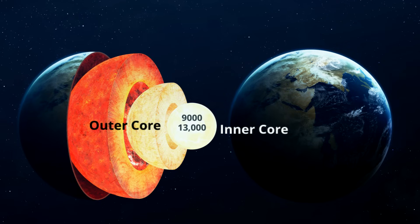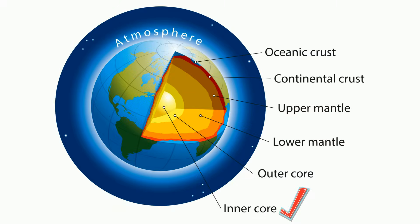The inner core is a solid layer and is around 755 miles or 1,200 kilometers thick and is composed mostly of iron. This iron is under so much pressure that it stays as a solid.